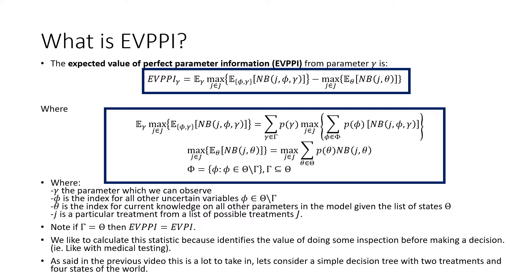We like to calculate this statistic because it identifies the value of doing some inspection before making a decision like in the case of medical testing. As said in the previous video, this is a lot to take in. So let's consider a simple decision tree with two treatments and four states of the world.